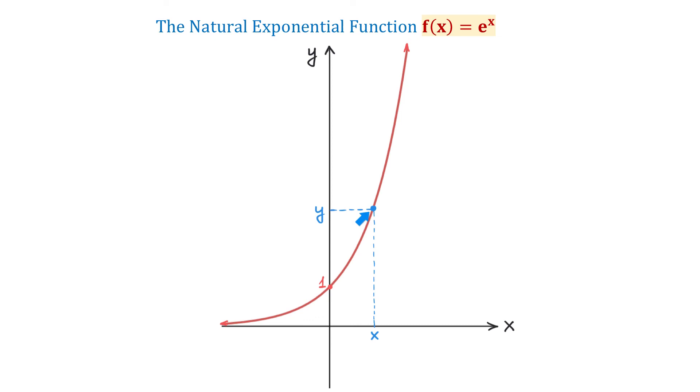Now, through this point, let's draw a tangent line. So, here we have the tangent line, then the slope of this tangent line has the same value as the value of the function at this point.